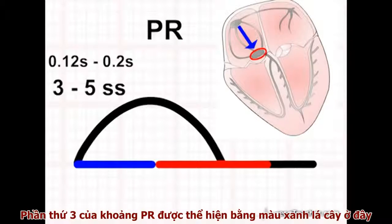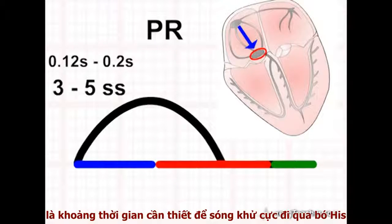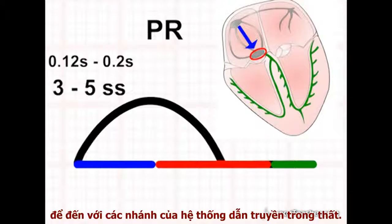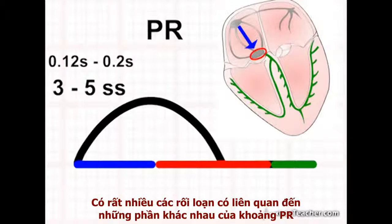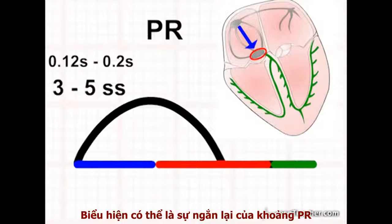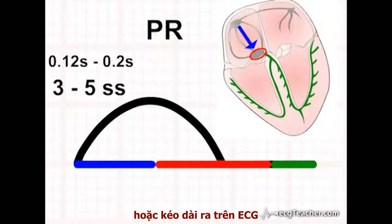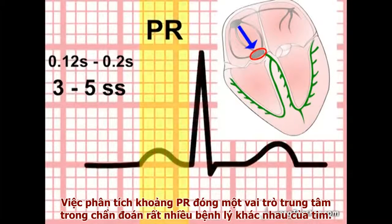The third contributor to the interval is the time taken by the depolarisation wave to transit through the bundle of His and the branches of the intraventricular conducting system. Many important disorders are associated with alterations in different components of the PR interval, manifesting as abnormal shortening or prolongation on the ECG. Analysis of the PR interval plays a central role in diagnosing many different disorders of the heart.